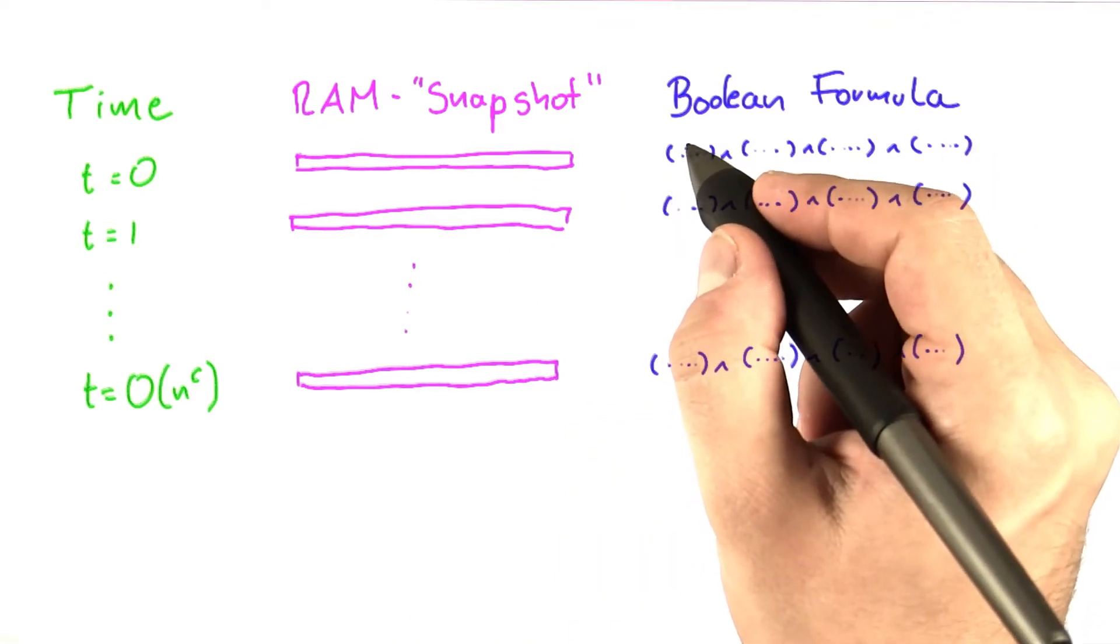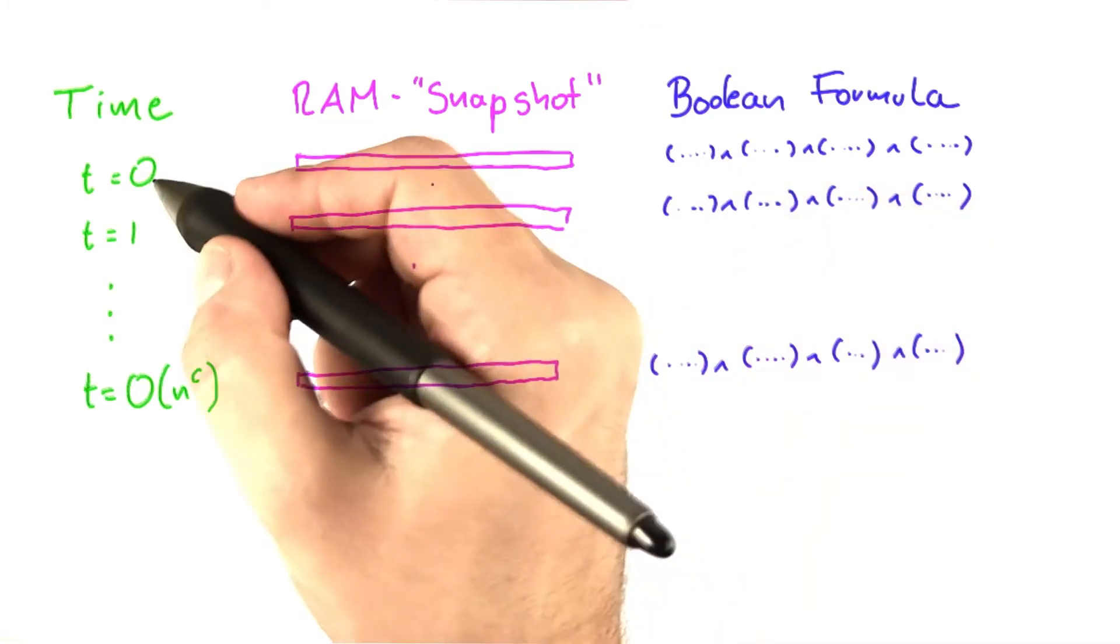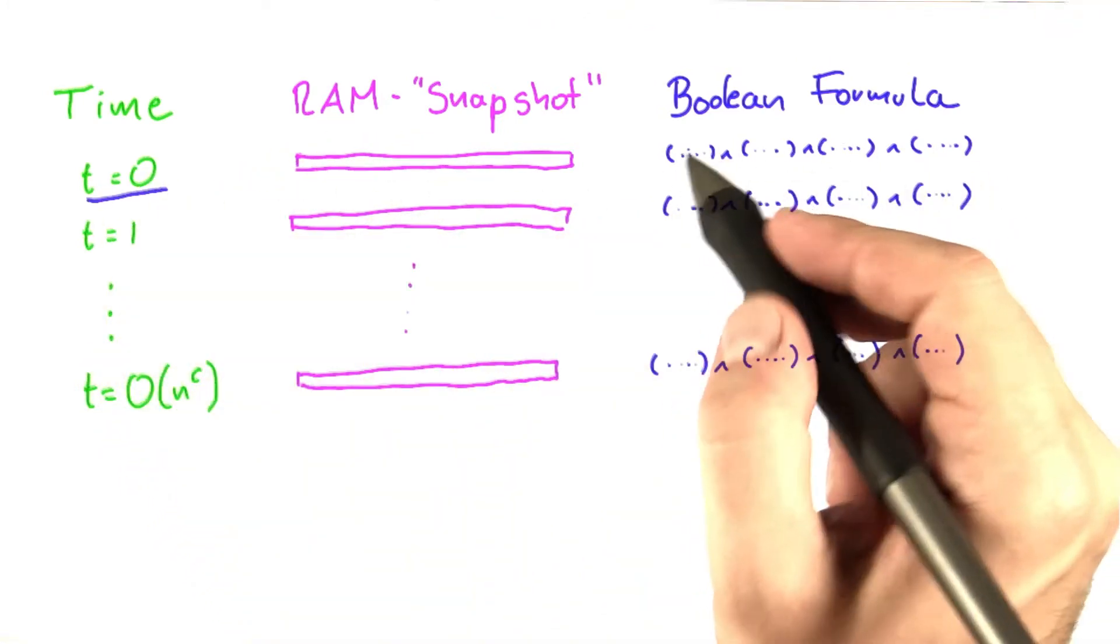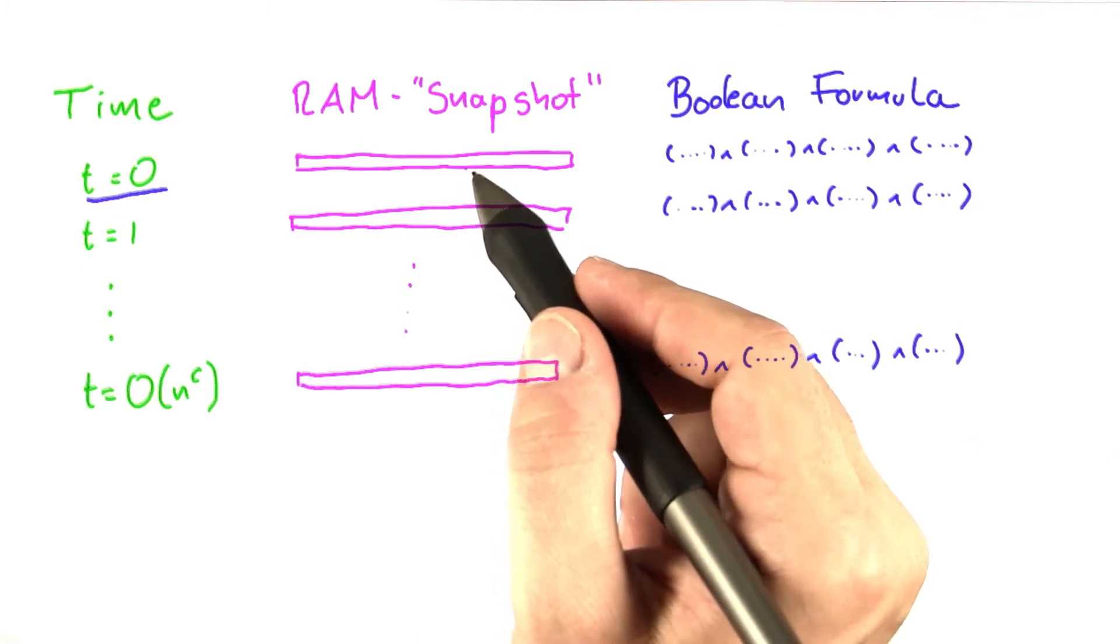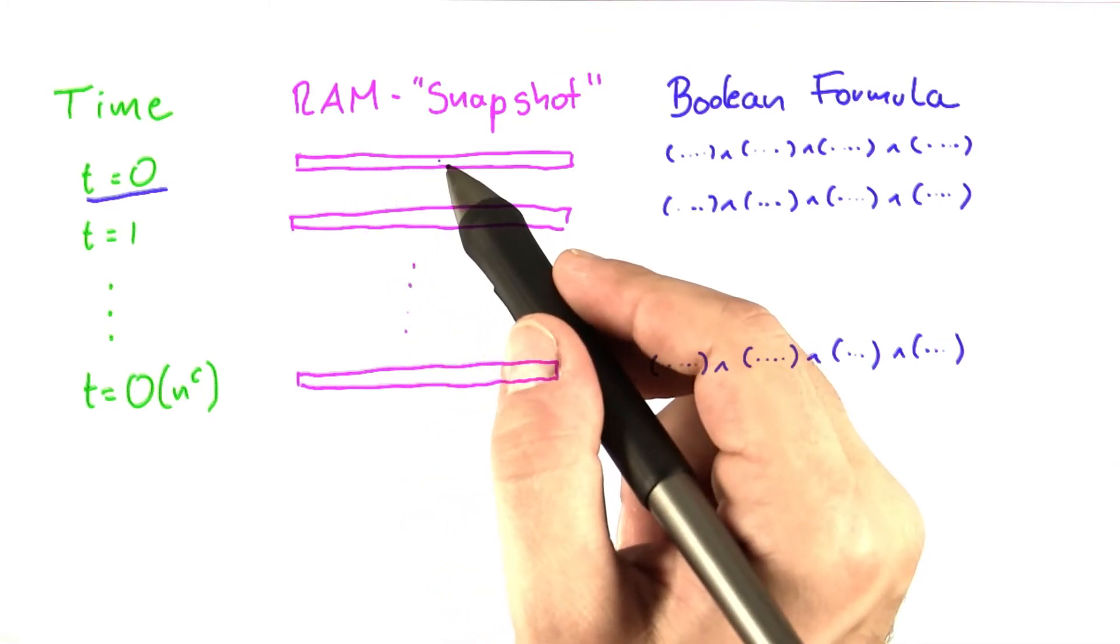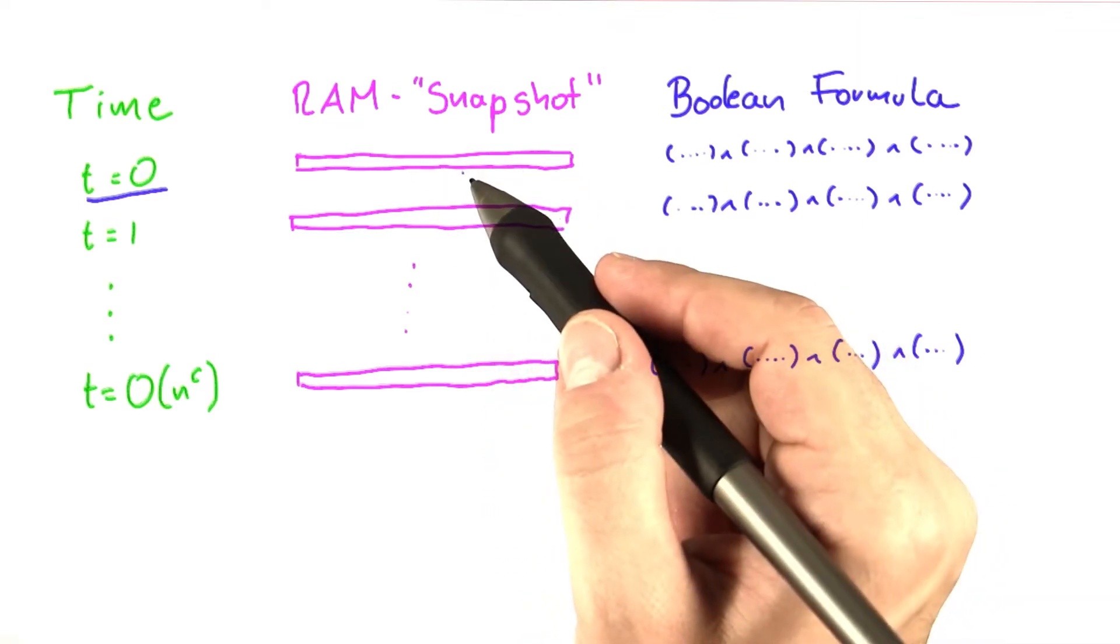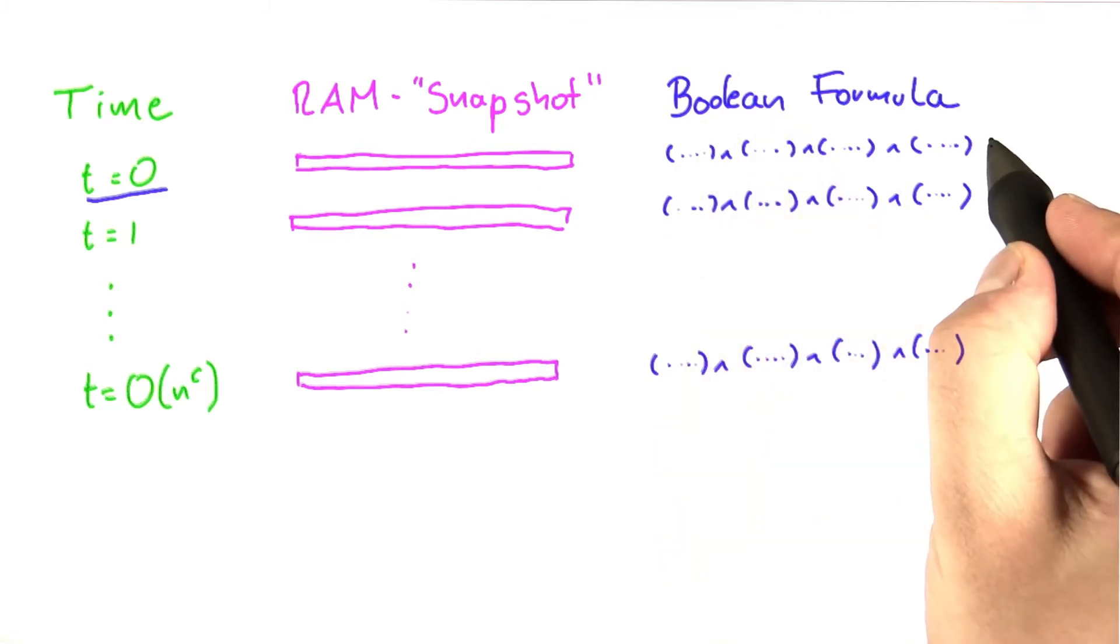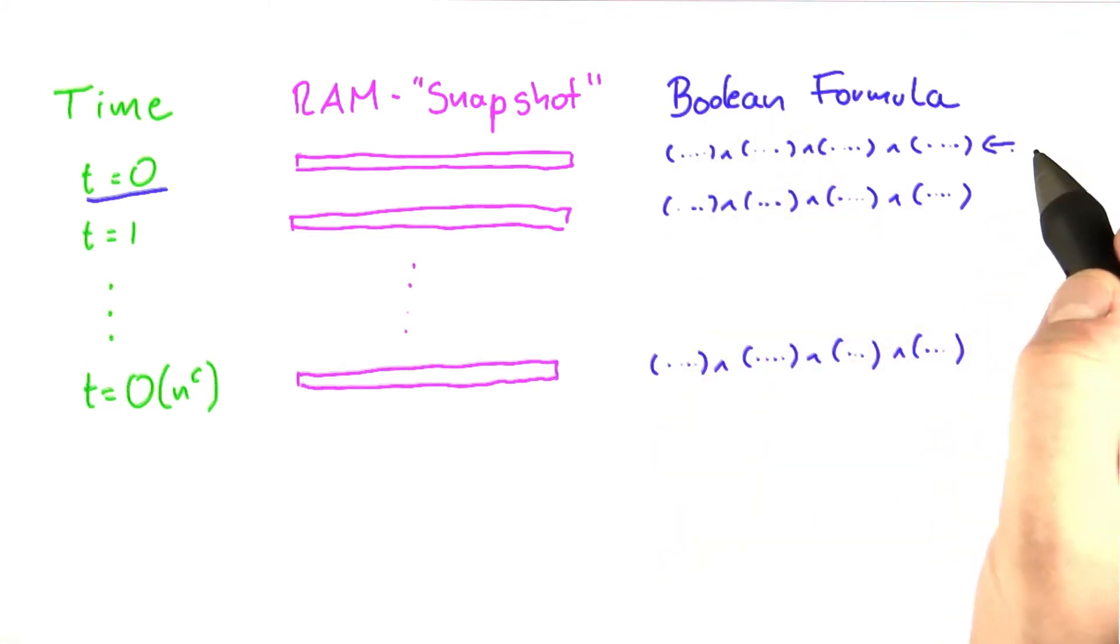What we also know is the assignment of the variables for the first Boolean formula, at time point zero. The reason why we know that is that at the beginning we know what the machine is doing, because in the memory there's the input, the algorithm starts at the first line, and in the memory where we have the output and intermediate results, there's nothing in there. So here, we already know what the variables are going to be.